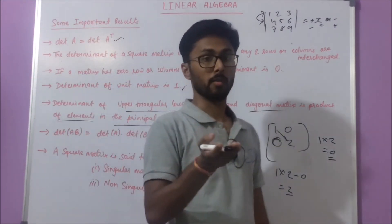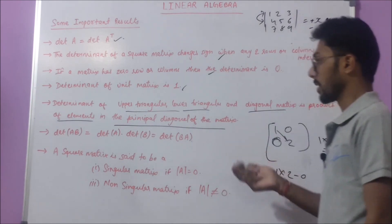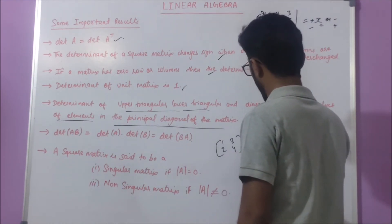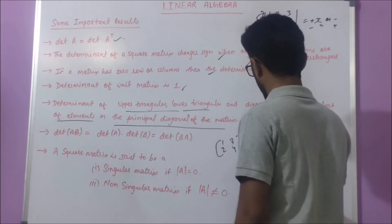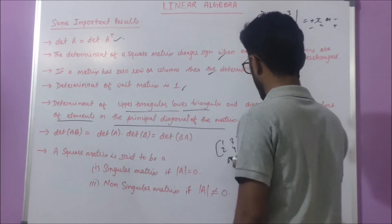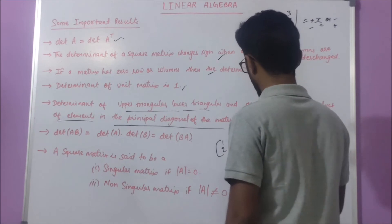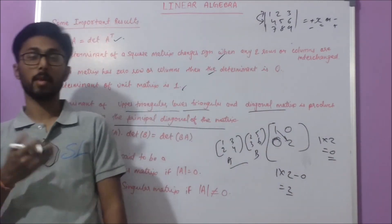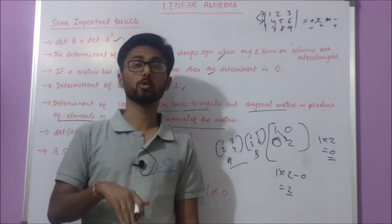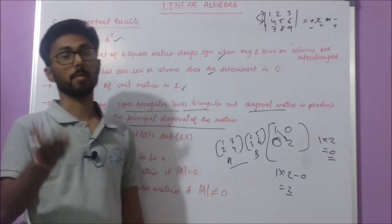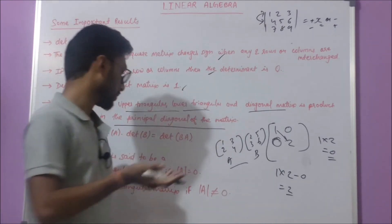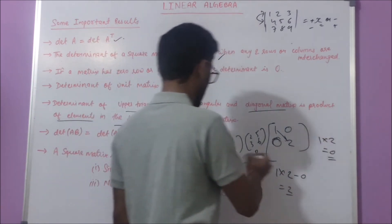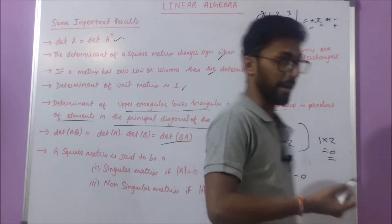The next result is: the determinant of AB equals the determinant of A multiplied by the determinant of B. So if we have matrix A = [[1,2],[3,4]] and matrix B = [[2,3],[5,6]], then det(AB) = det(A) × det(B). This also equals det(B) × det(A).